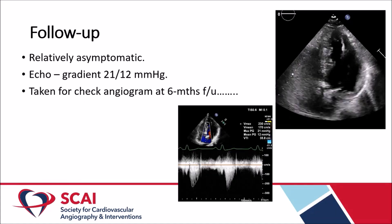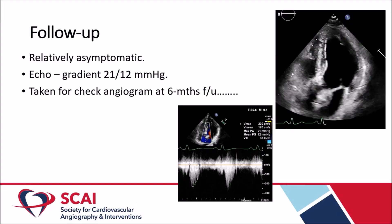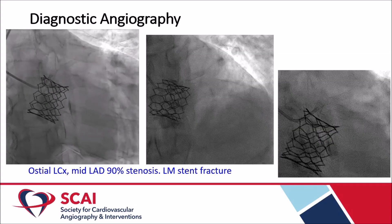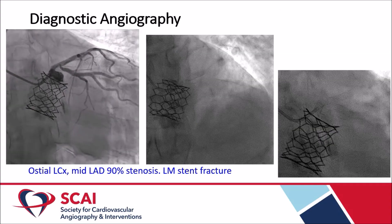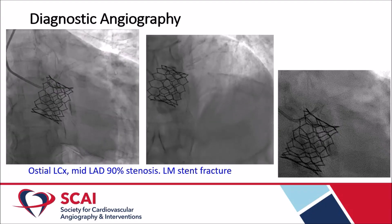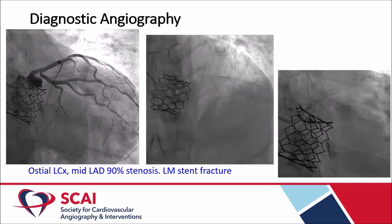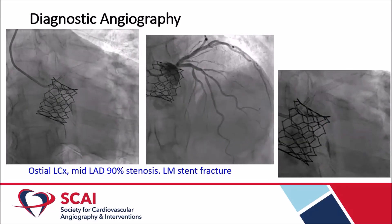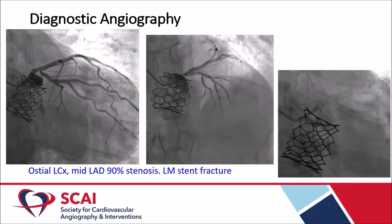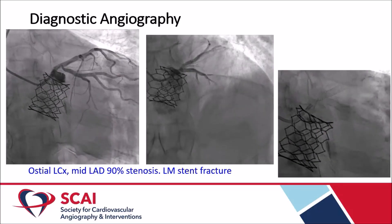At follow-up, the patient remained relatively asymptomatic. Echo gradient was 21/12 mmHg. At six-month follow-up check angiogram, the ostial LCX showed 90% stenosis, the mid-LAD also had 90% stenosis, and a left main stent fracture was clearly appreciable on fluoroscopy.